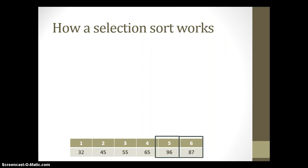One more pass: comparing position five with position six, they are in the wrong order, so we swap them. And that's it. We don't need to do it for the last element in the array, because once everything before it has been sorted, the last element will also be sorted. And as you can see, we now have a sorted array.